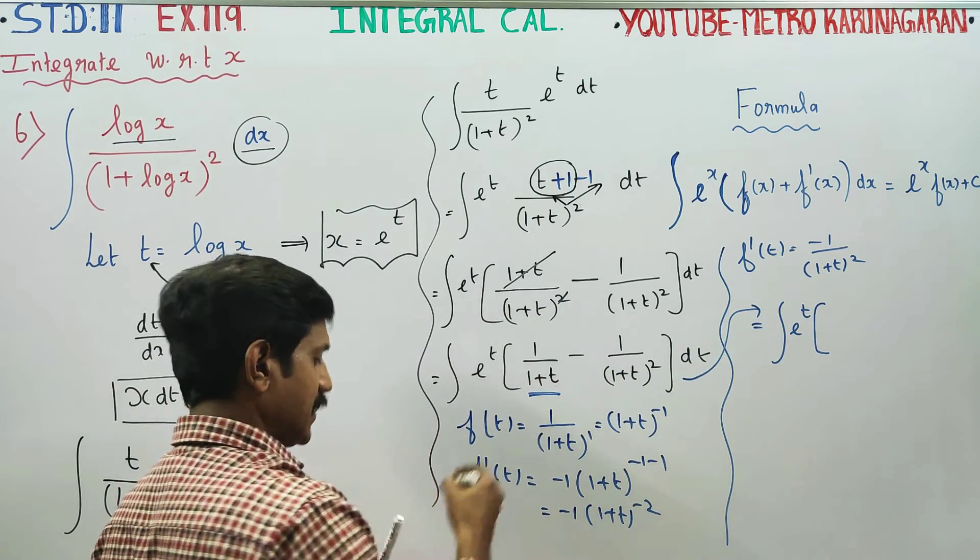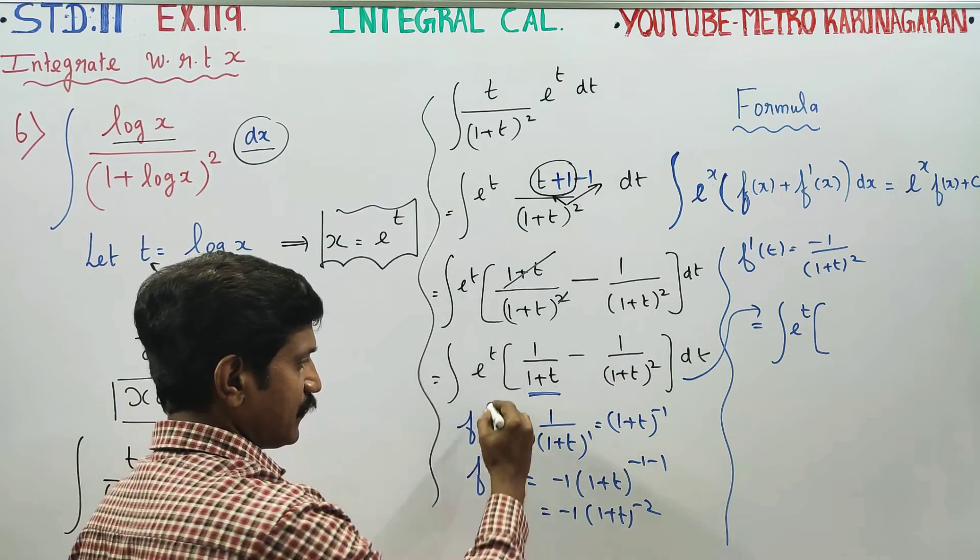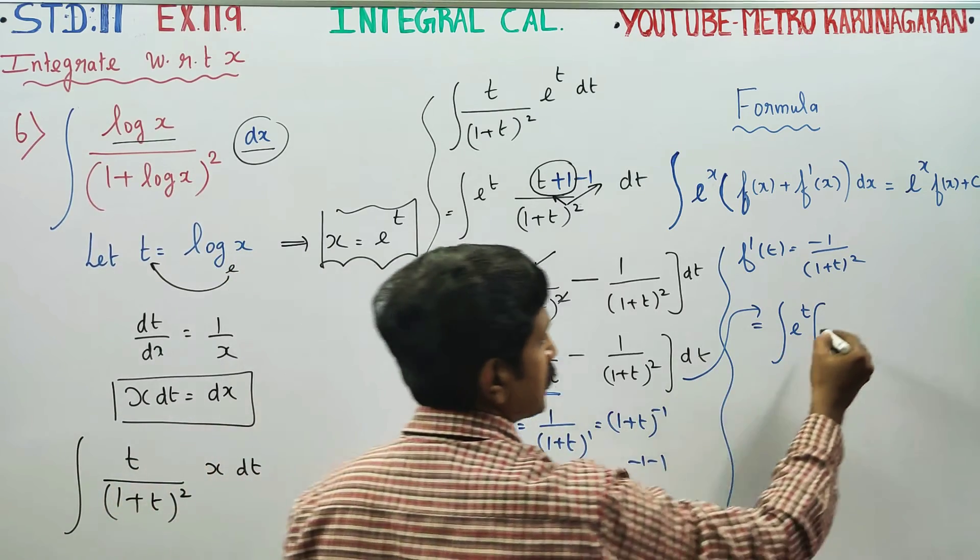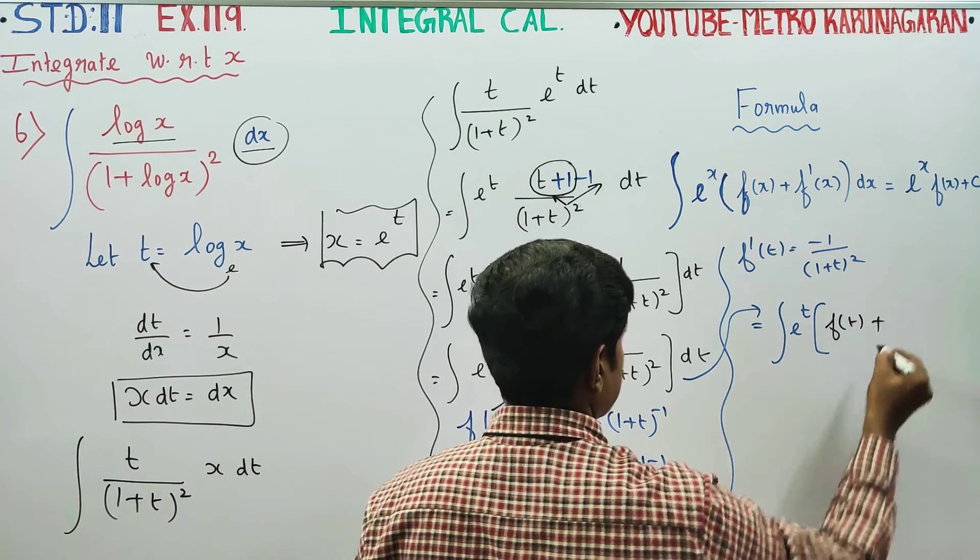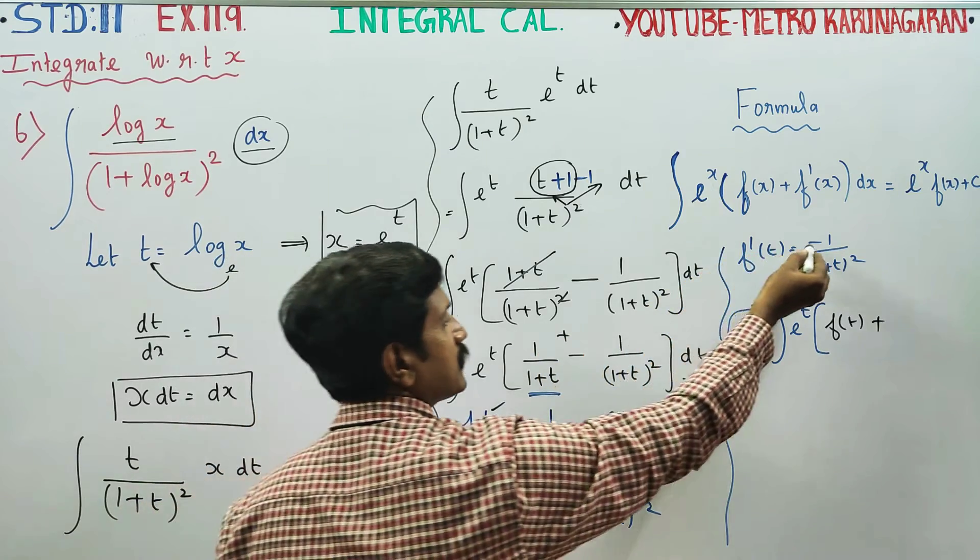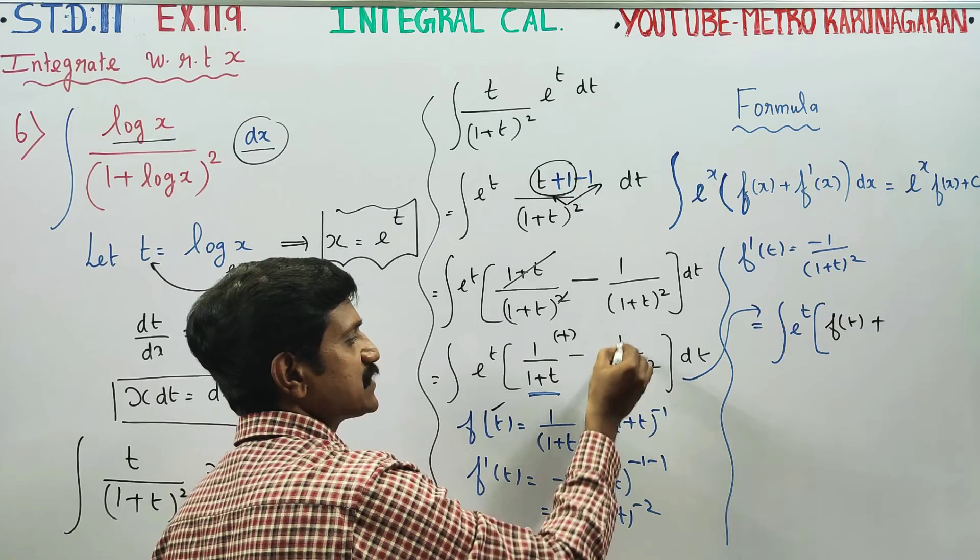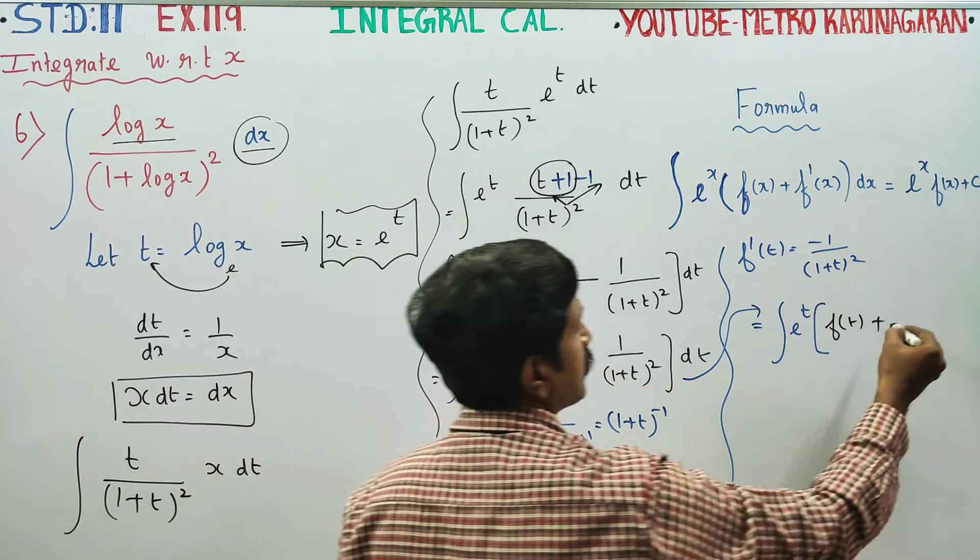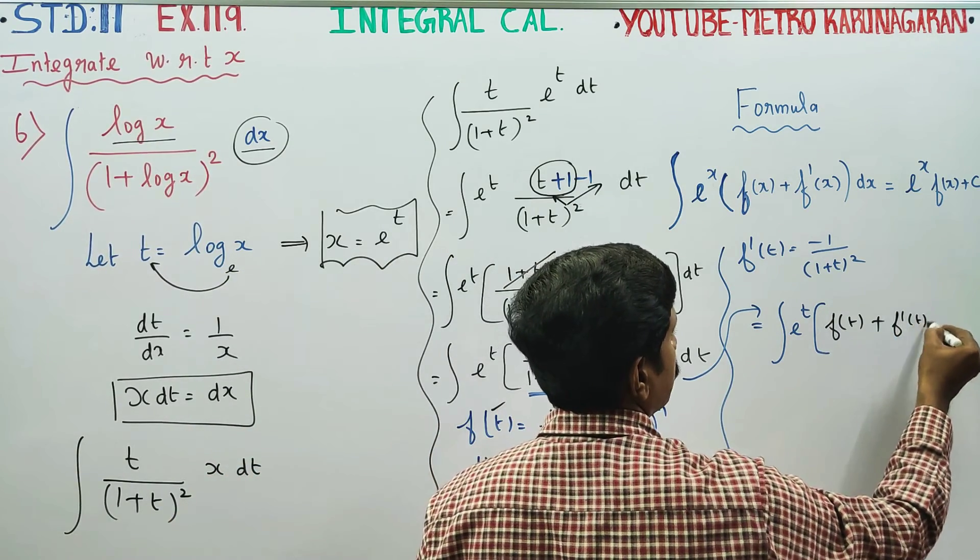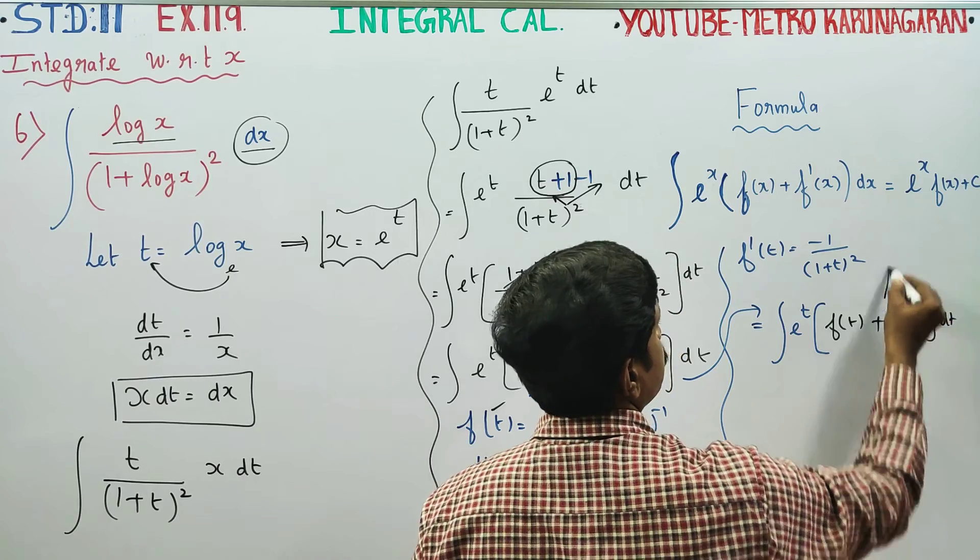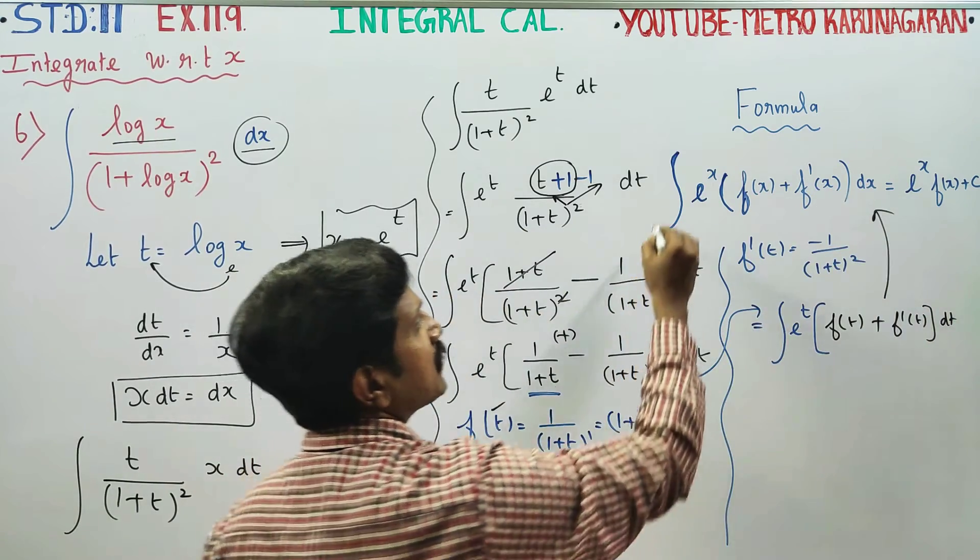This is my f of t. 1 by 1 plus t is f of t, and f prime of t is the derivative. It matches with this main formula. This is our formula.